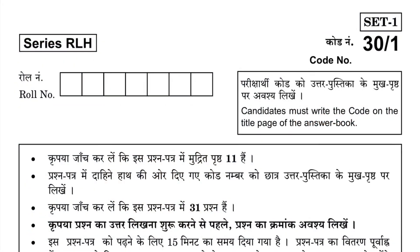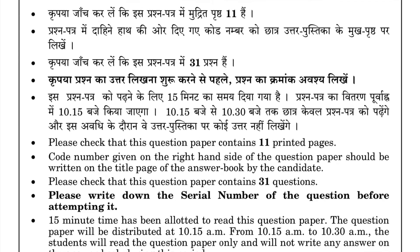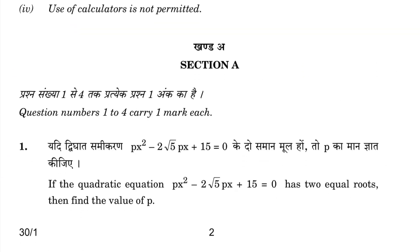Hello everyone, in this video we are going to start solving the 2015 CBSE board paper. Let's start with Section A, one mark each question. Question 1: In this question we are given the equation px² - 2√5px + 15 = 0.